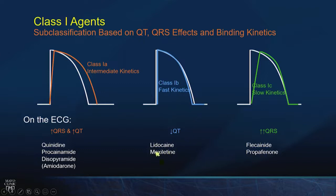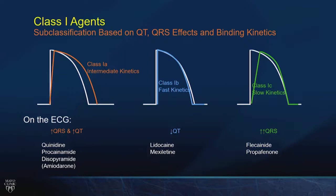Lidocaine, and its orally bioavailable version mexiletine, have relatively little effect in normal myocardium on either phase 0 or repolarization. As a result, they're not terribly proarrhythmic. But they have a particular proclivity to injured, ischemic, or slightly depolarized myocardium — and that's why we reach for lidocaine in the setting of polymorphic VT occurring in the context of myocardial ischemia in the CCU.